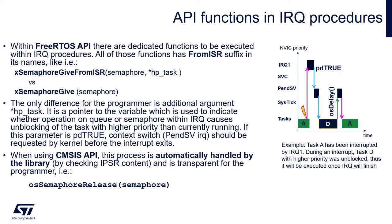Let's look at what happens when we execute an OS function from an interrupt procedure. Within FreeRTOS API there are dedicated functions to be executed within IRQ procedures. All of these functions have a FromISR suffix in their name, like xSemaphoreGiveFromISR, as seen on the screen. The only difference for the programmer is an additional argument — a pointer to a variable indicating whether the operation on the queue or semaphore within the IRQ causes unblocking of a task with higher priority than the currently executing one. If this parameter is true, a context switch is needed by calling the PendSV interrupt before the kernel exits the currently executed interrupt.